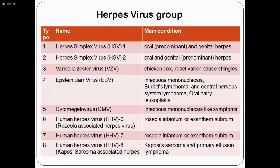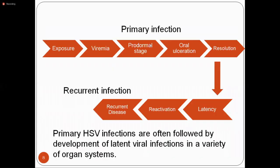HHV-8, also called Kaposi's sarcoma-associated herpesvirus, is associated with Kaposi's sarcoma and primary effusion lymphoma. Most herpes viruses have a special feature: the virus can stay inside the nerve root ganglia and later get reactivated, traveling along the nerve root to give rise to local disease. Primary disease is systemic; reactivated disease is localized.